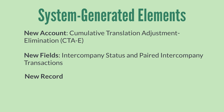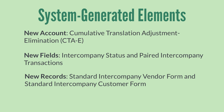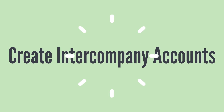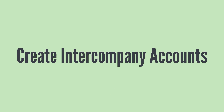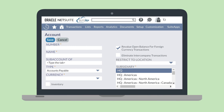NetSuite will also create two records: the Standard Intercompany Vendor Form Record and the Standard Intercompany Customer Form Record. Next, you'll need to create Intercompany Accounts. These are General Ledger accounts that record transactions like Intercompany Payments, Loans, and Funds Transfers between Subsidiaries.